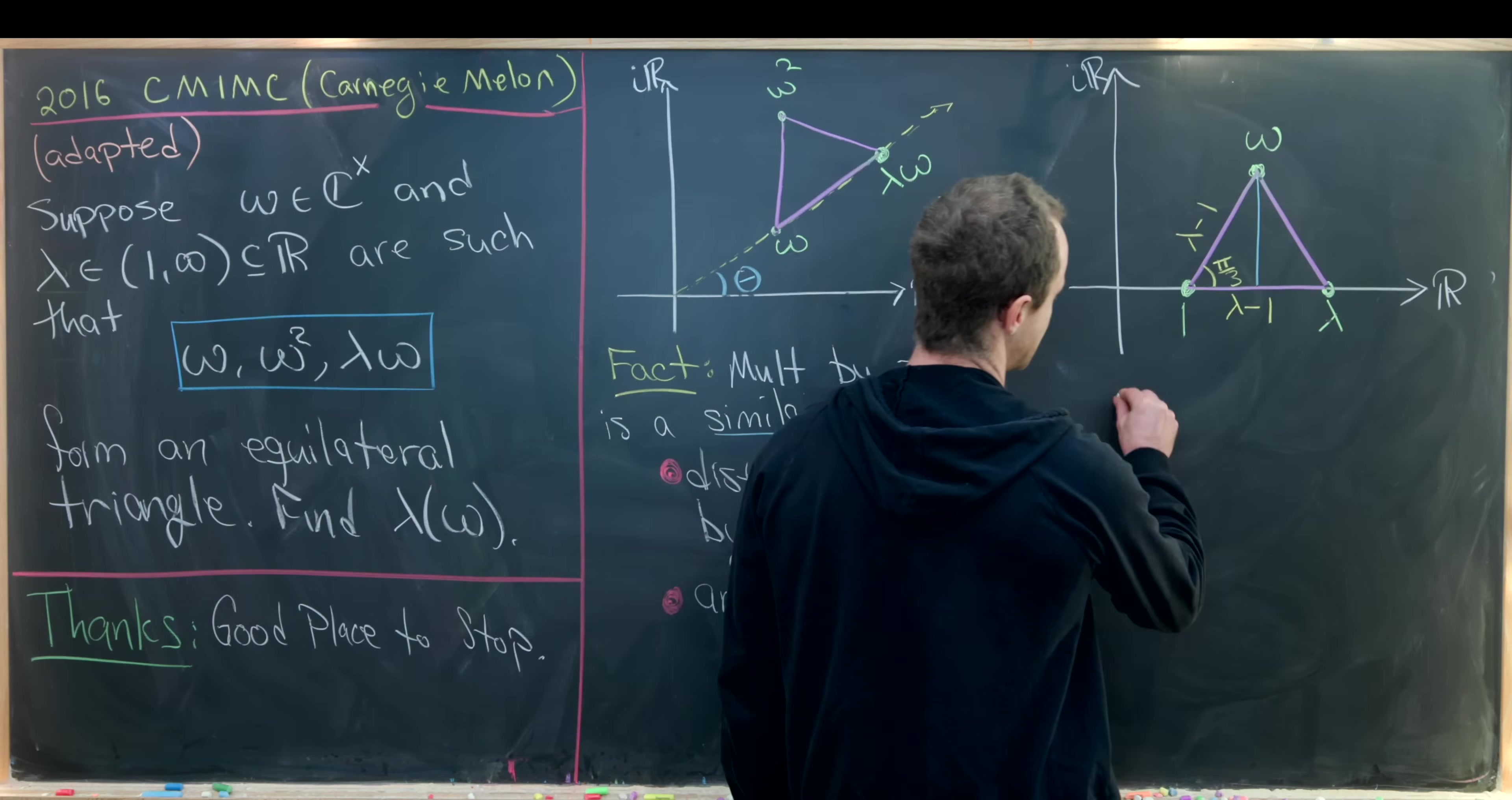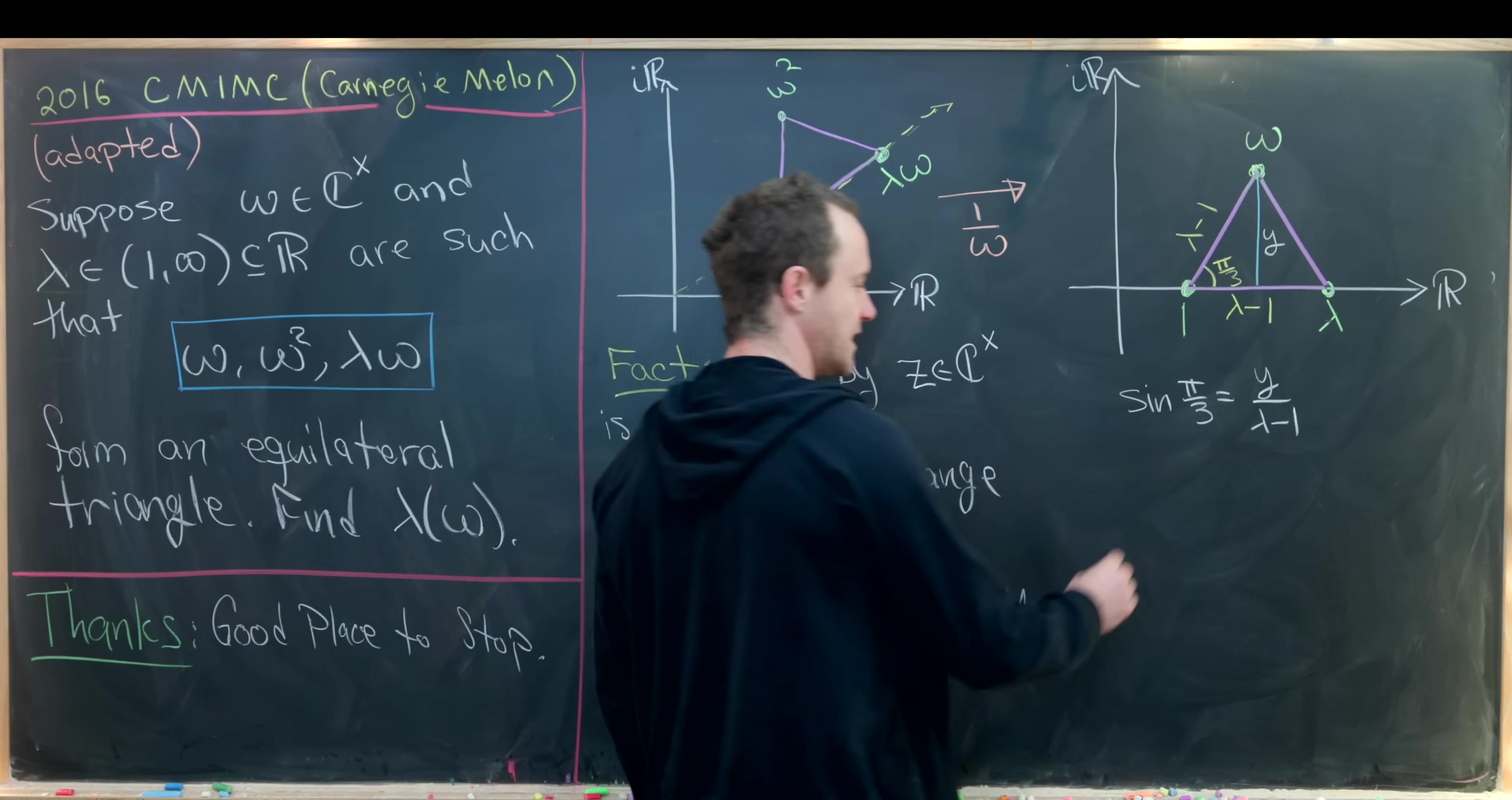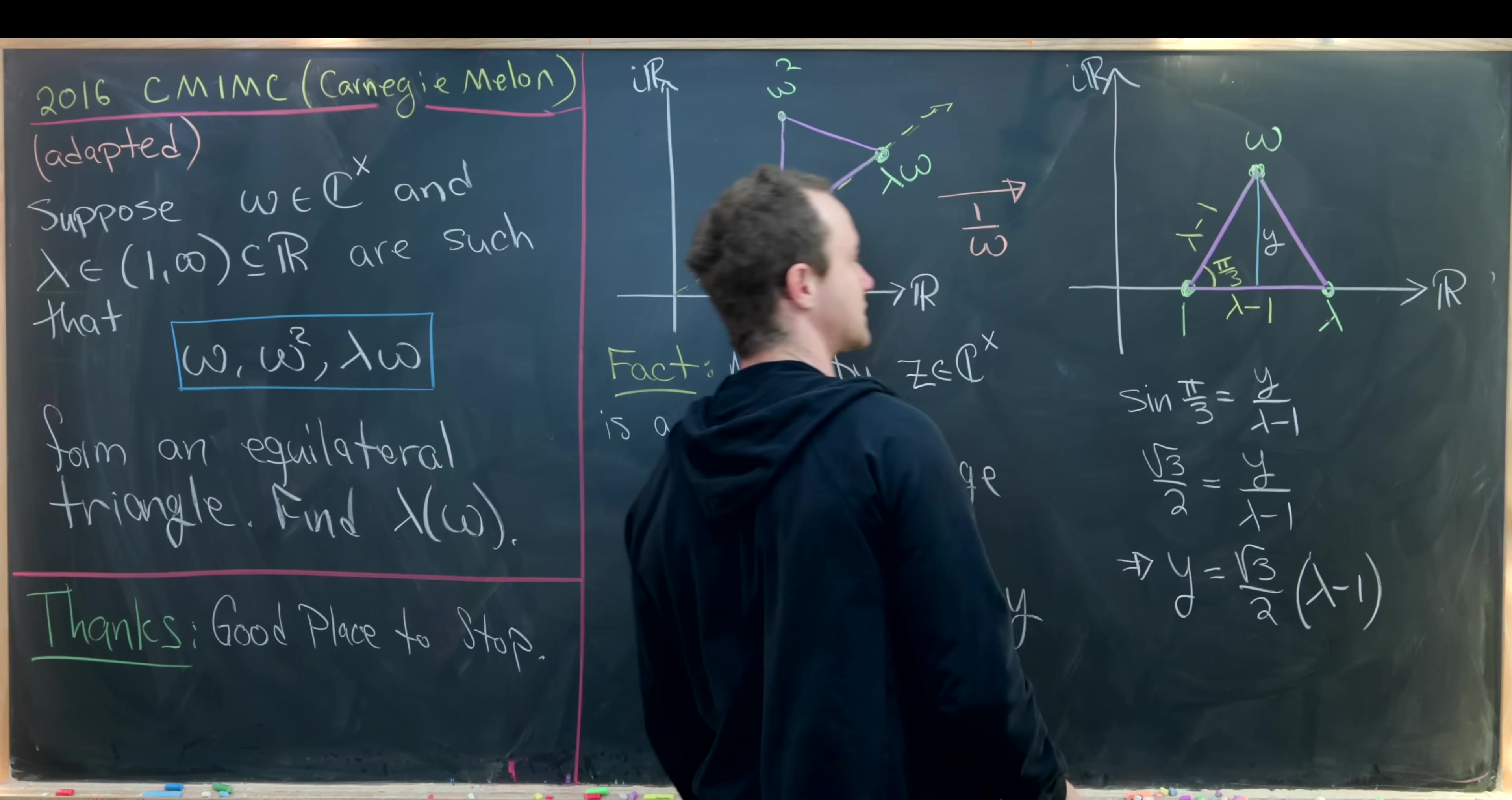So let's notice that we know the sine of pi over 3 will be equal to this height, which I'll maybe call y. So let's put a y in here over the hypotenuse, which is lambda minus 1. Furthermore, we know sine of pi over 3 is the square root of 3 over 2. So that's equal to y over lambda minus 1, telling us that y is equal to the square root of 3 over 2 times the quantity lambda minus 1.